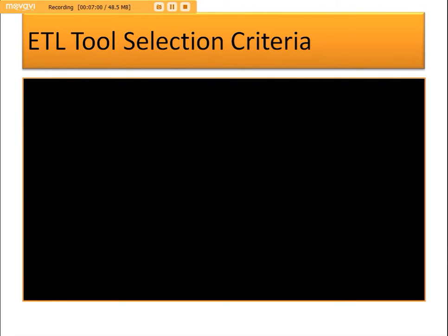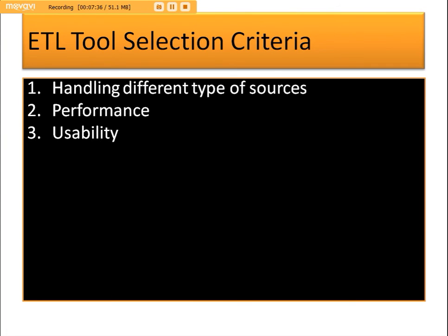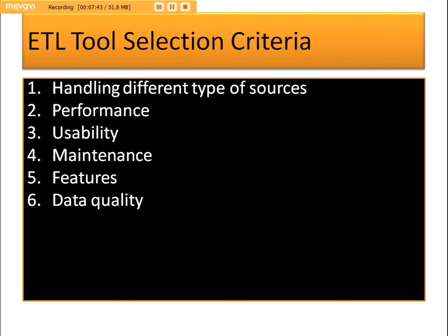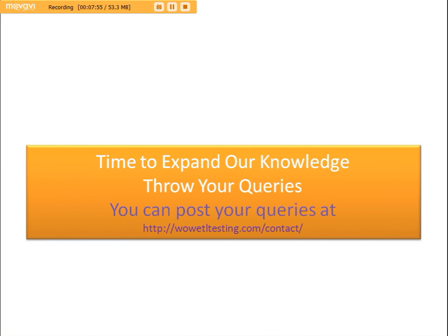The ETL tool selection criteria includes several factors: the tool's ability to handle different types of sources in terms of heterogeneous data — it should support different source formats like databases, flat files, XML, and big data. Additionally, job performance, usability, maintenance, new features and support, quality of output, and cost of the tool are all considered as part of the tool selection criteria.